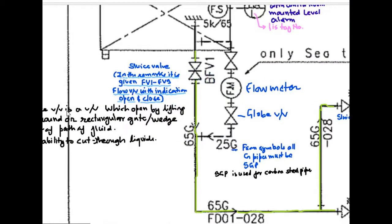What is sluice valve? Sluice valve is a valve which opens while lifting a round or rectangular gate slash wedge out of path of fluid. Sluice valve has the ability to cut through the liquids.